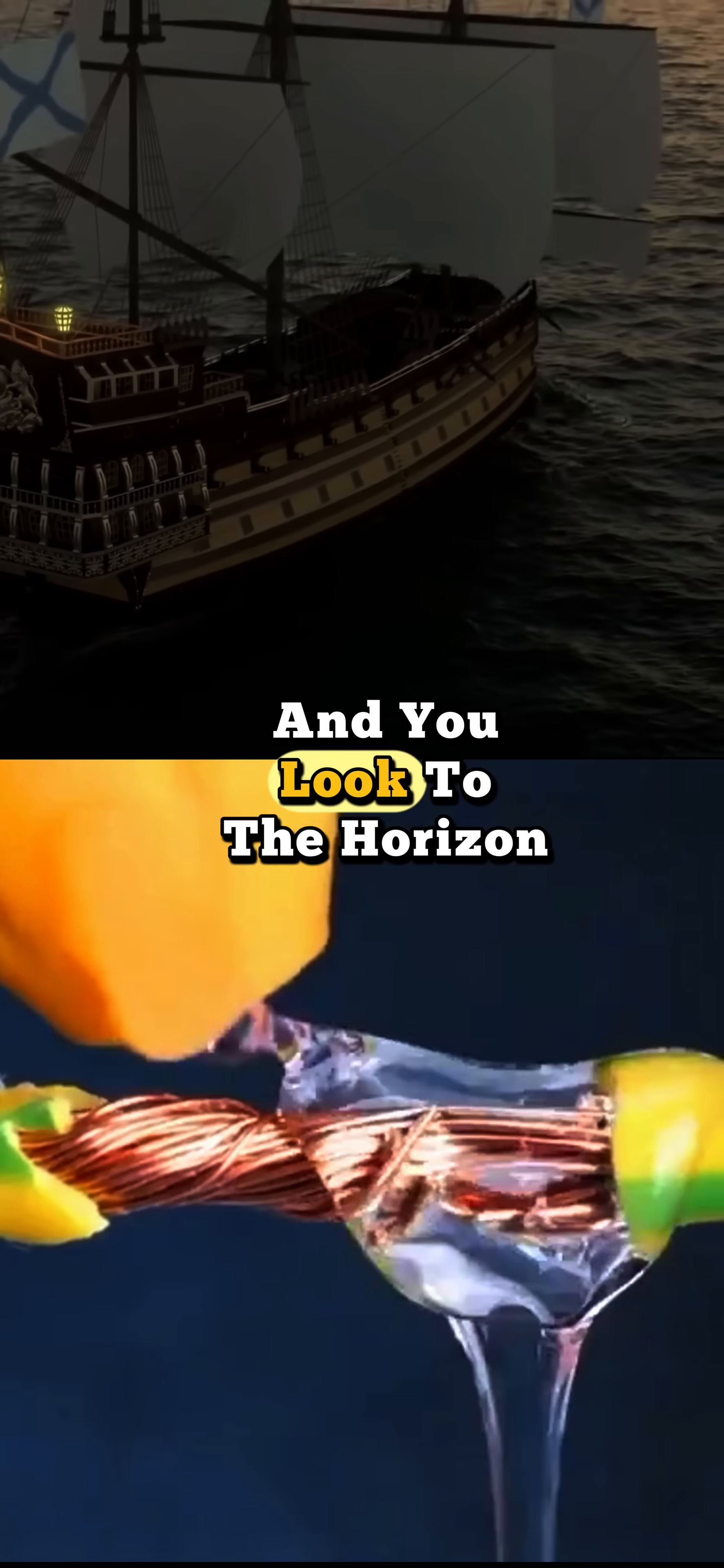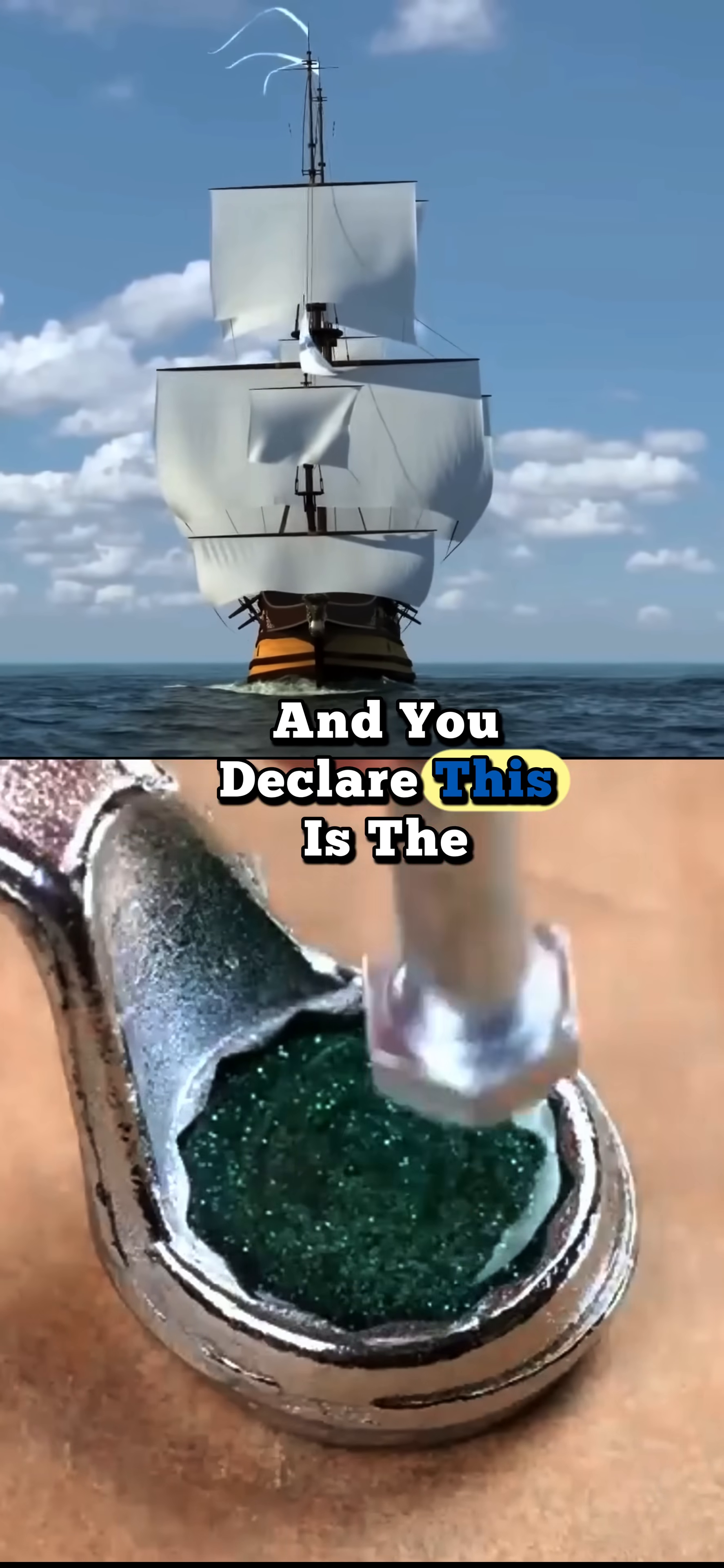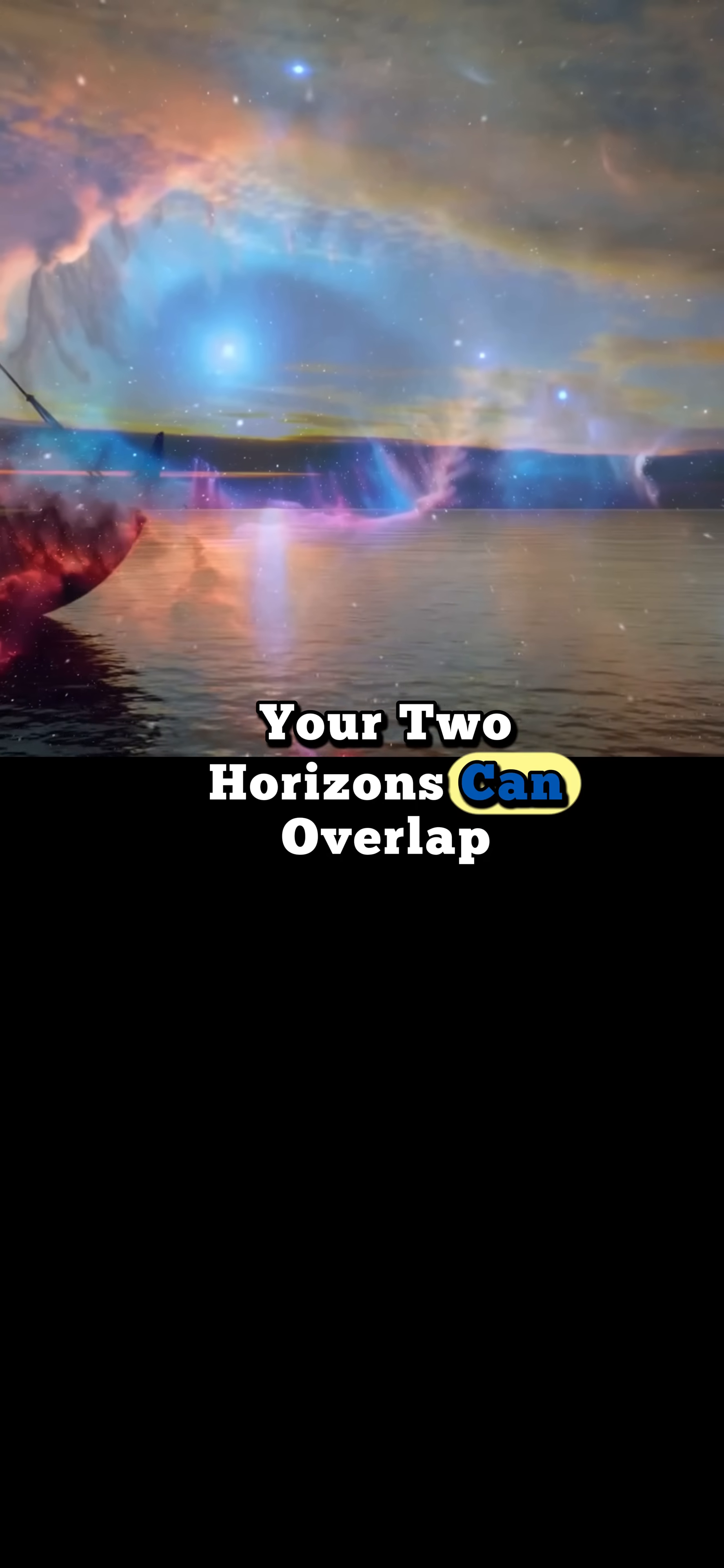Imagine you're a ship at sea and you look to the horizon. And that's your whole universe there to the horizon. There's another ship that has its own horizon. And you declare, this is the universe. And these ships don't even see each other. You'll only see each other if somehow your two horizons can overlap.